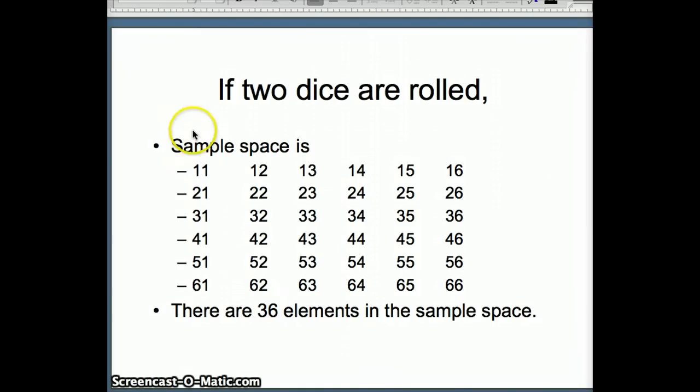If you add them together, 1 plus 1 is 2, 6 plus 6 is 12. 2 happens one time out of 36, 12 happens one time out of 36. But 7: 1 plus 6 is 7, 2 plus 5 is 7, 3 plus 4 is 7, 4 plus 3 is 7, 5 plus 2 is 7, 6 plus 1 is 7. 7 occurs 6 times out of 36. So clearly the sums are not all equally likely. That's why we have to write it in the current form.